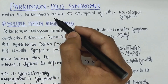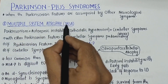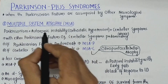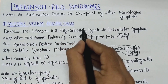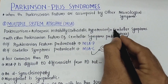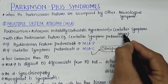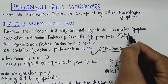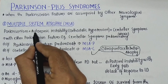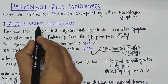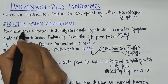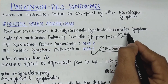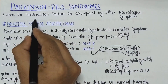The first Parkinson's plus syndrome we will talk about is Multiple System Atrophy (MSA). In multiple system atrophy, the Parkinsonism is accompanied by autonomic instability. The hallmark symptom of autonomic instability is orthostatic hypotension, and there are also accompanying cerebellar symptoms like ataxia — loss of coordination of body movements. So Parkinsonism plus autonomic instability plus cerebellar symptoms comprises multiple system atrophy, which is why it is called Parkinson's plus syndrome.